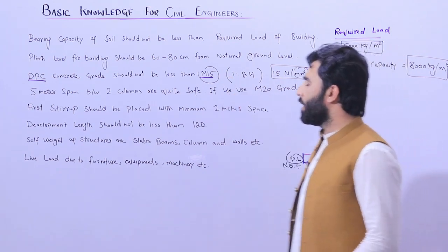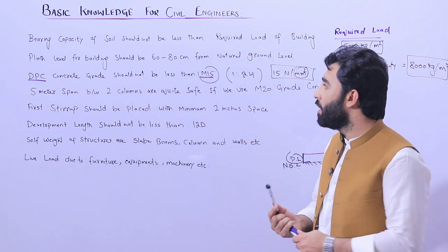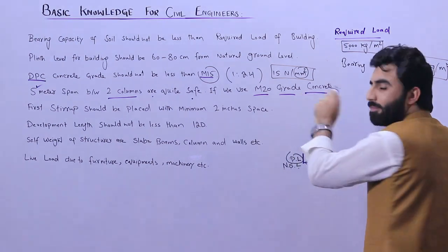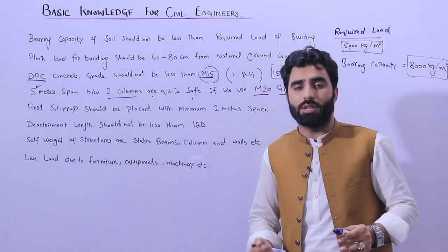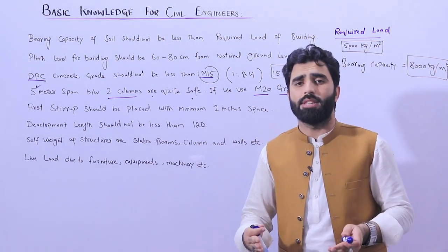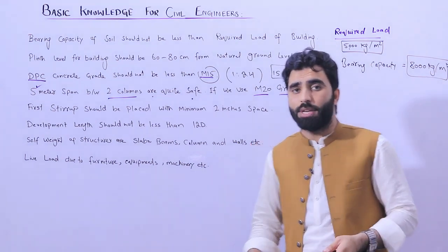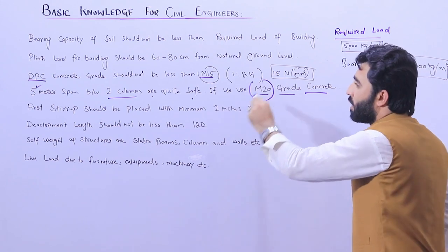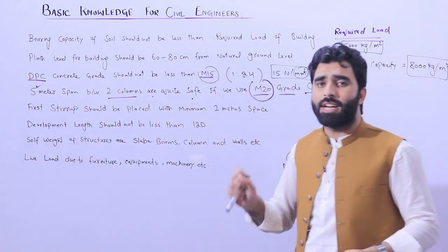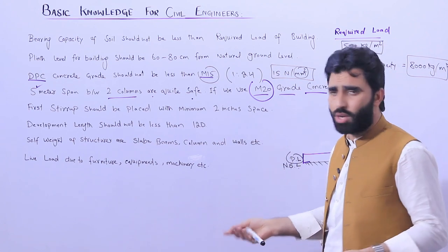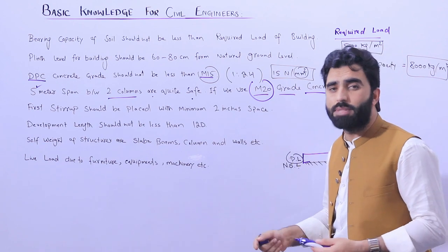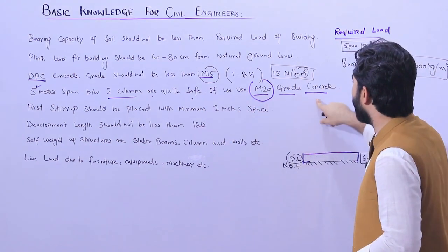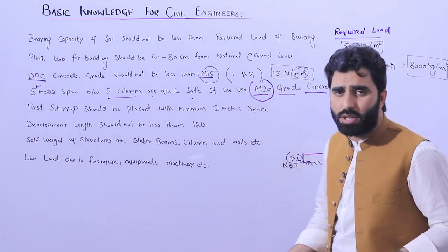The next point: a five-meter span between two columns is quite safe if we use M20 grade concrete. According to the structural load and bearing capacity of soil, you will design the footing, size of column, and inside steel reinforcement. If you have six or more steel rods, the concrete grade should not be less than M20. This is the normal grade of concrete we can use for foundation, beam, column, and slab. Five meters span between two columns is quite safe with M20 grade concrete; inside steel reinforcement depends on the structure load.